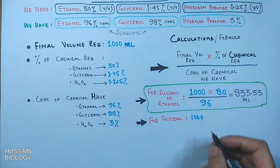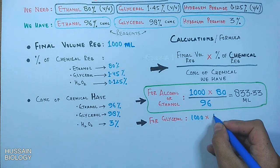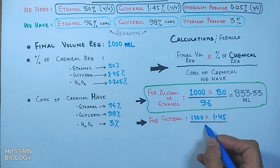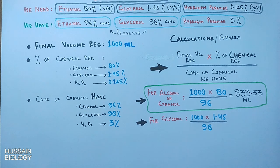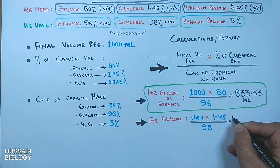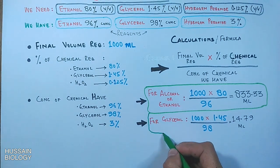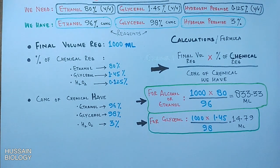From the glycerol equation — 1000 × 1.45 ÷ 98 — we get 14.79 ml. That is the amount of glycerol required for the final solution of 1000 ml.